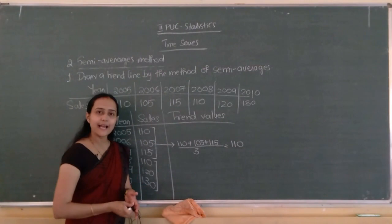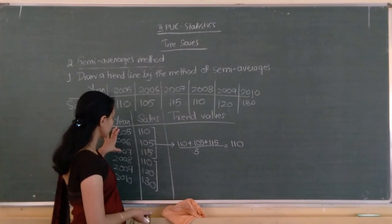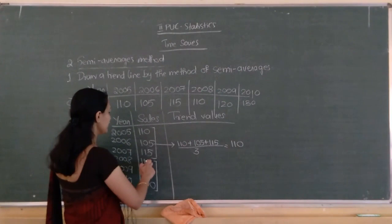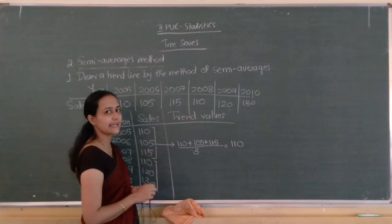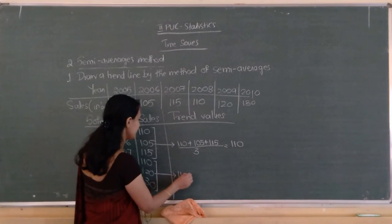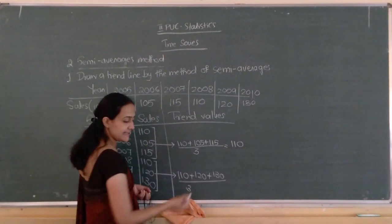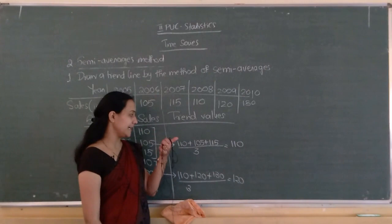Next, take the average of the second series: 110 plus 120 plus 130 divided by 3, which equals 120. The middlemost of the second group (2008, 2009, 2010) is 2009, so we write the trend value 120 against the year 2009. We have now obtained two trend points: 110 against 2006 and 120 against 2009.